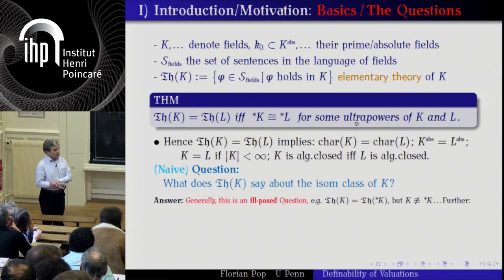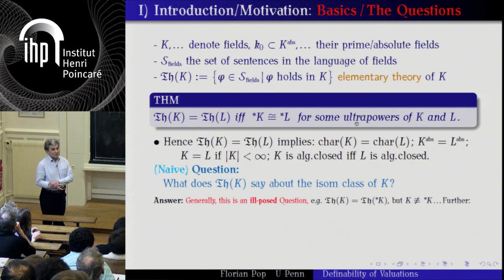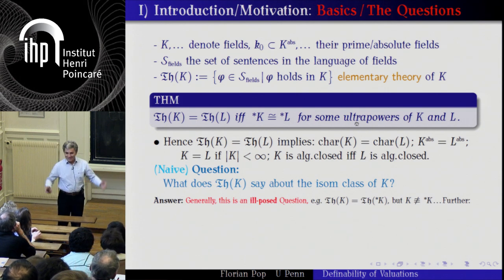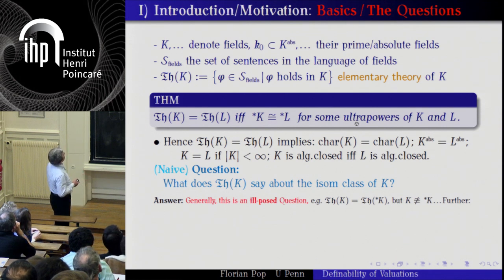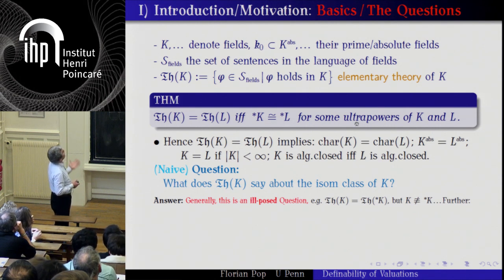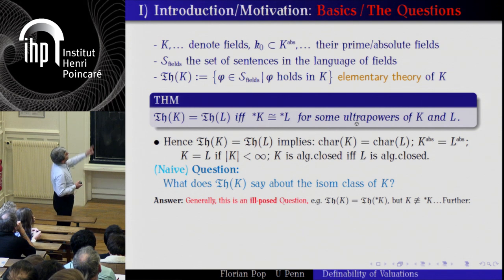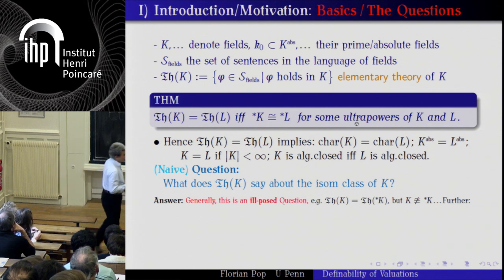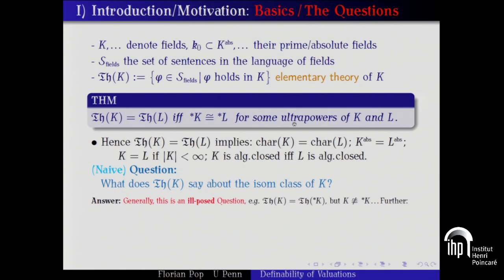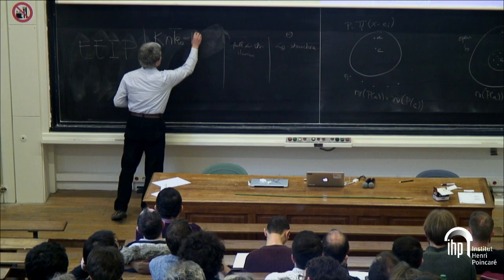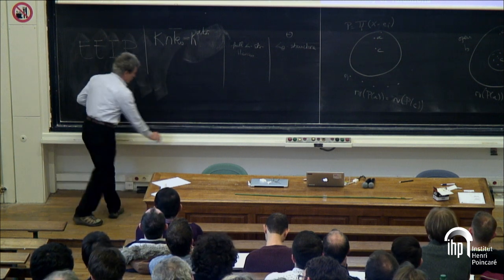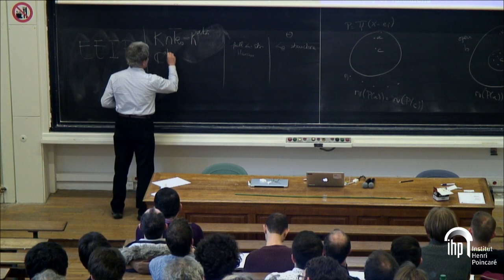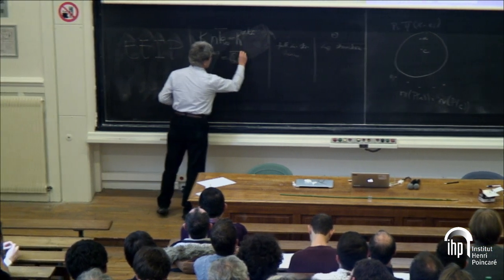Sometimes I have the feeling that I am preaching to the choir, but I suppose there are people here who do not know much about model theory. Therefore, this is a very low-level introduction to what I want to say. Namely, K and L will denote fields. K₀ and L₀ will be their prime fields. K_eps is the absolute field — that is, for a field K, you intersect with K₀ algebraically closed, and that is the absolute field. For instance, the absolute field of the complex numbers is Q-bar.